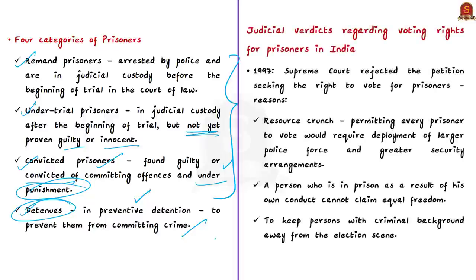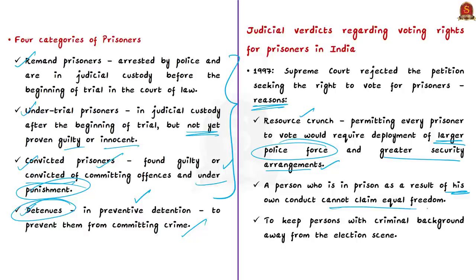Now let us see some judicial verdicts regarding voting rights for prisoners in India. In 1997, the Supreme Court rejected a petition that sought the right to vote for prisoners, providing three reasons: resource crunch requiring larger police deployment and security arrangements; a person in prison as a result of their own conduct cannot claim equal freedom; and keeping persons with criminal background away from the election scene. However, ironically many politicians have criminal cases registered against them and contest elections themselves.